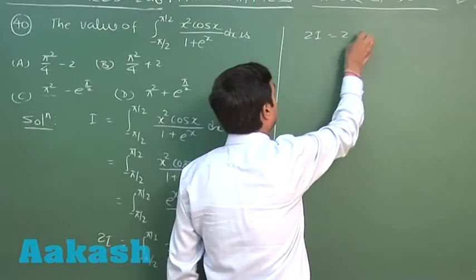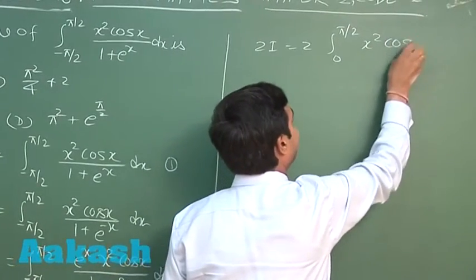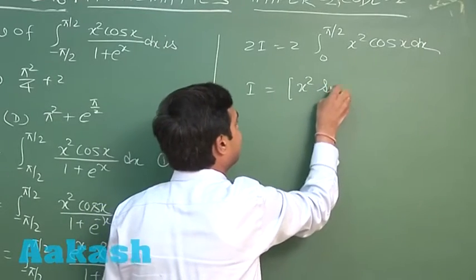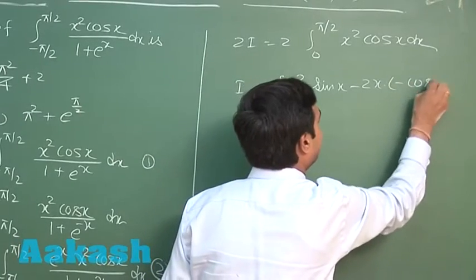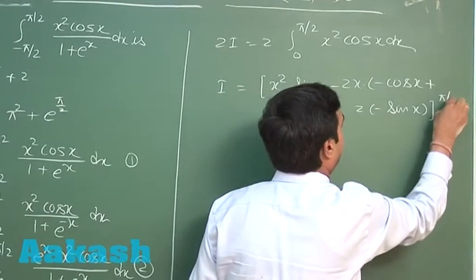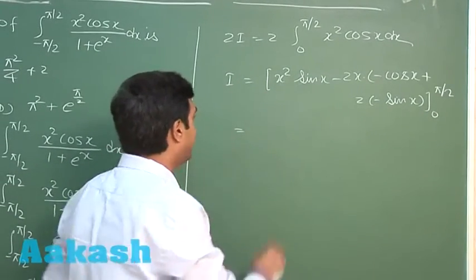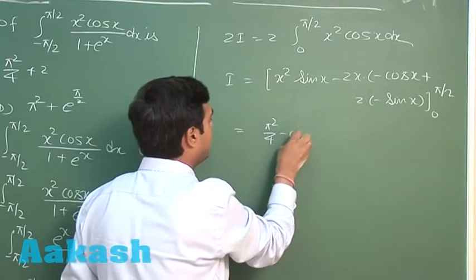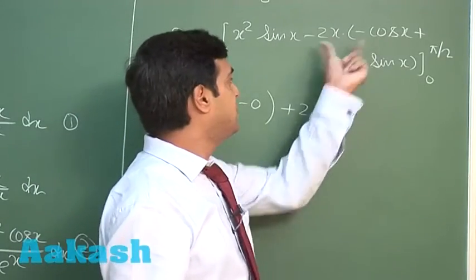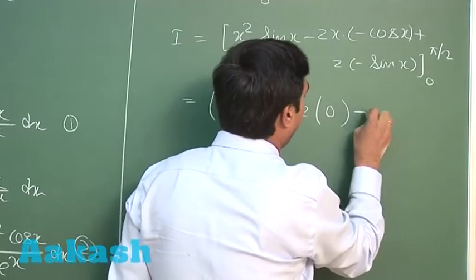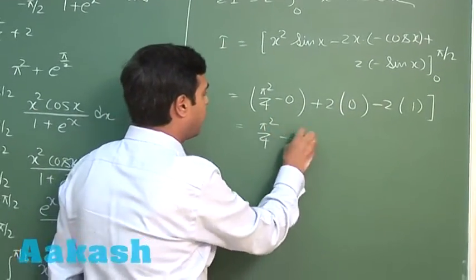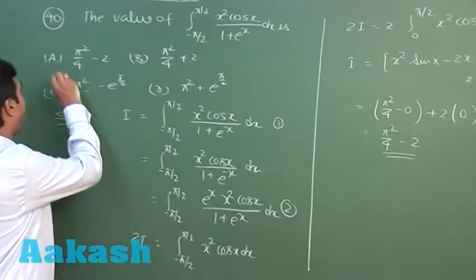Simplifying, I = ∫ from 0 to π/2 of x²cos(x) dx. Integrating by parts: [x²sin(x) + 2x·cos(x) − 2sin(x)] evaluated from 0 to π/2. Substituting π/2: π²/4 × 1 + 0 − 2 × 1 = π²/4 − 2. Substituting 0 gives 0. Therefore I = π²/4 − 2. From the given options, option A is correct.